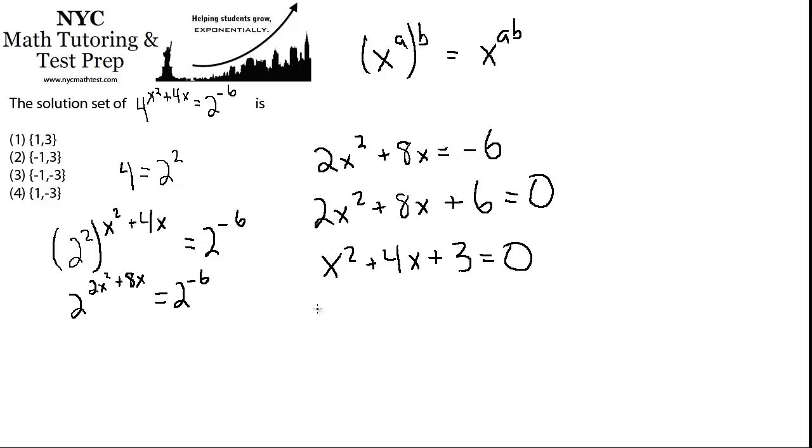And then it's just a matter of factoring. This is a standard factoring problem. What multiplies to positive 3 and adds to 4? And it will be plus 3 and plus 1, right? Because 3 times 1 is 3, and 3 plus 1 is 4, so that should work.